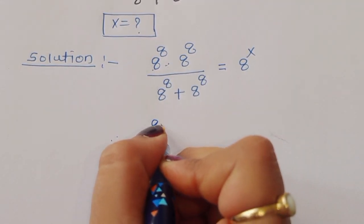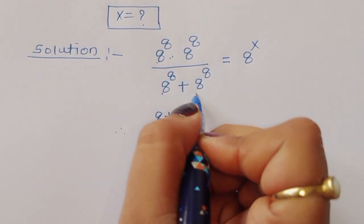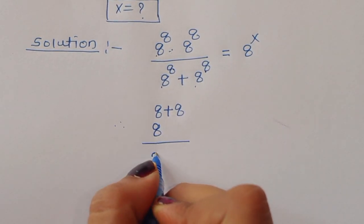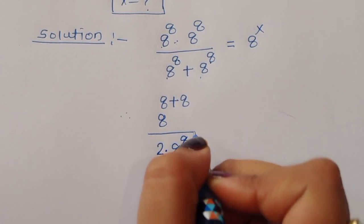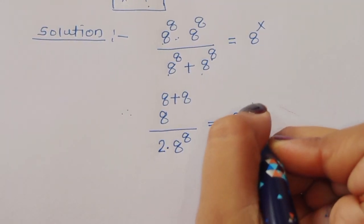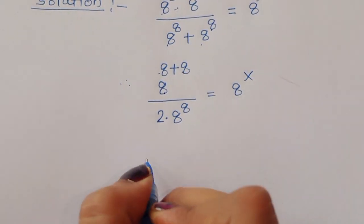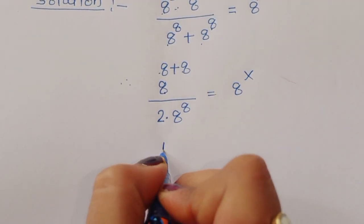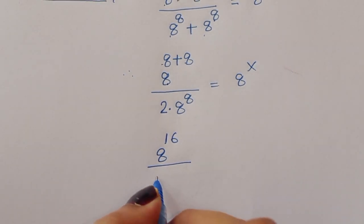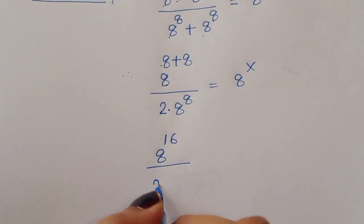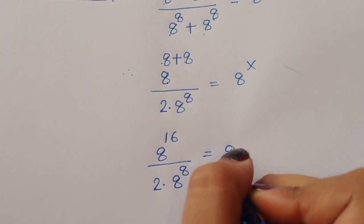So the numerator becomes 8 power 8 plus 8, and the denominator 8 power 8 plus 8 power 8 we can write as 2 times 8 power 8. So we have 8 power 16 divided by 2 times 8 power 8, which is equal to 8 power x.